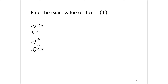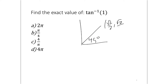Let's find the exact value of tan inverse of 1. Pause the video and give it a try. This asks: on the unit circle, what angle gives us a tangent of 1? At 45 degrees we have root 2 over 2 and root 2 over 2. Tangent is sine over cosine, so dividing those gives 1. The angle is 45 degrees, which we write in radians as pi over 4.